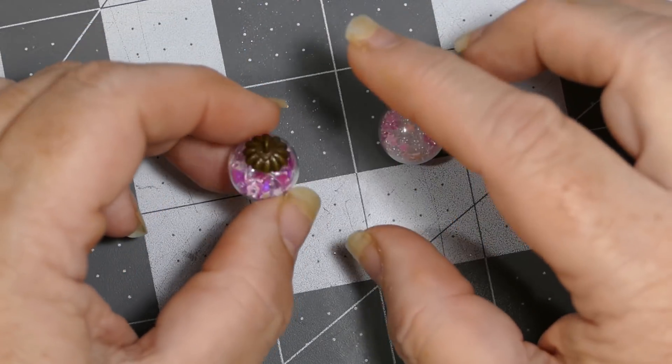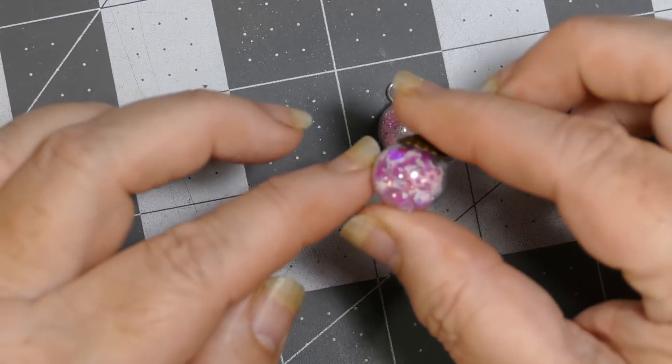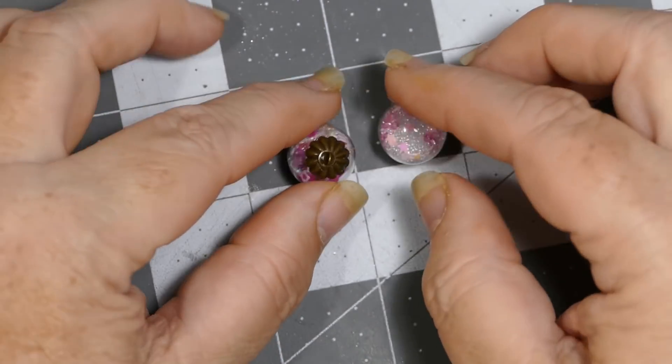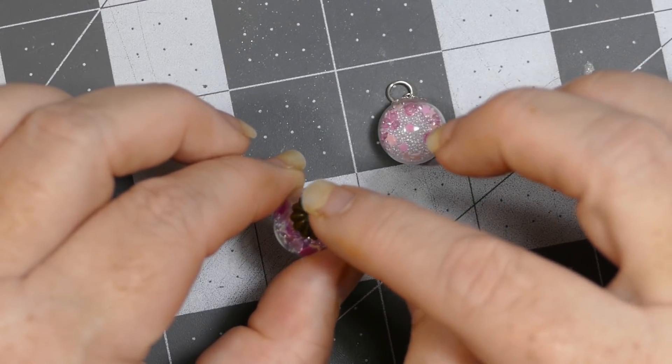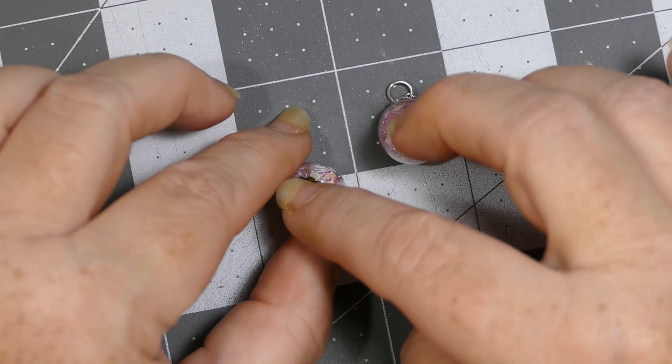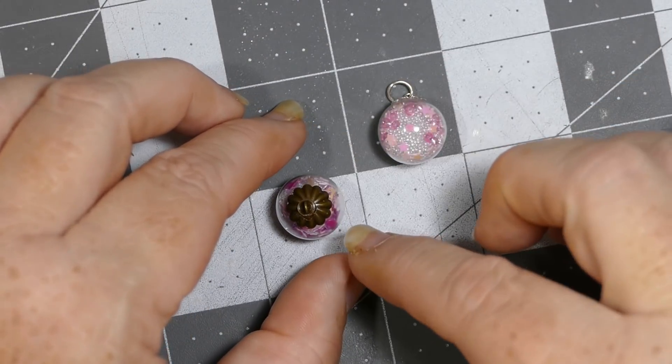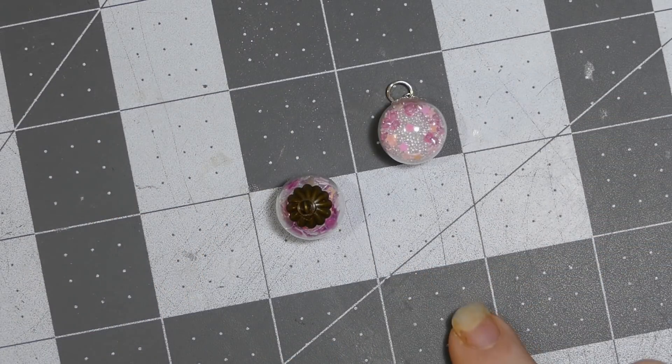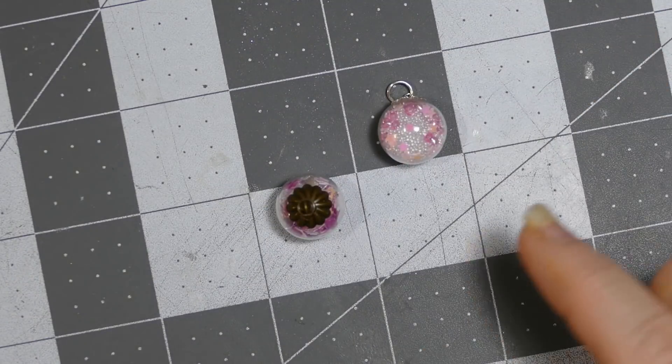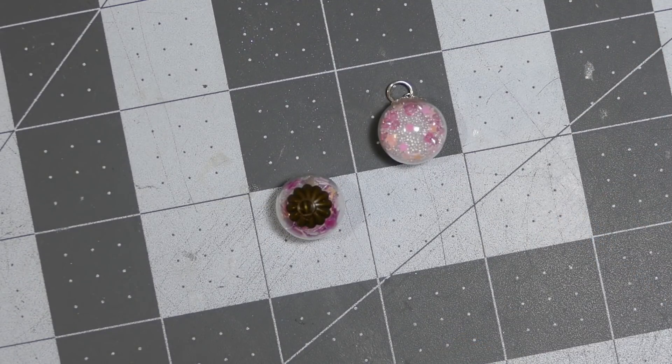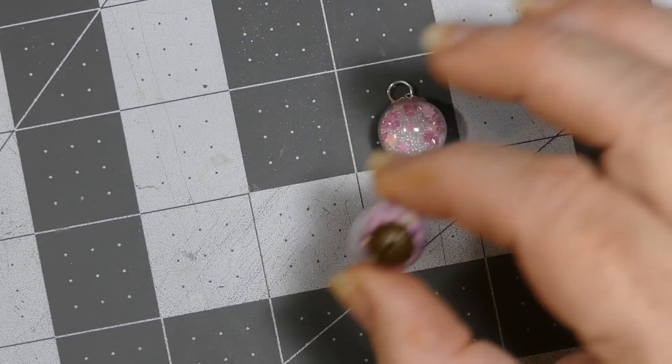And then once I got everything in that I wanted, I put my finger on top of the hole and I shook it really good to mix everything up. And I put a tiny bit of E6000 all the way around the hole, then put the topper on and then held it for just a second till I was sure it was going to stay in place. And I did these before I went to bed, so I left them on my desk. I set them all up in a little row, made sure they were all sitting up, went to bed that night, got up in the morning, they were dry.